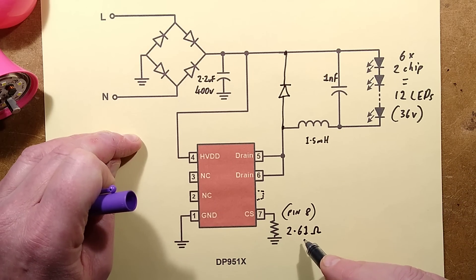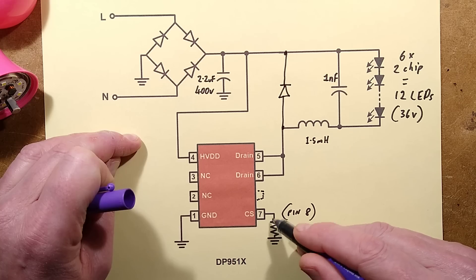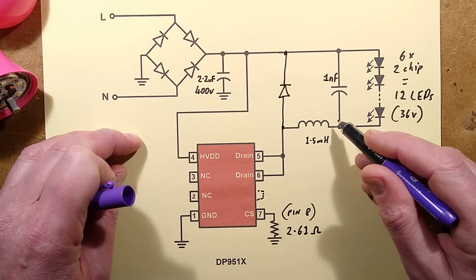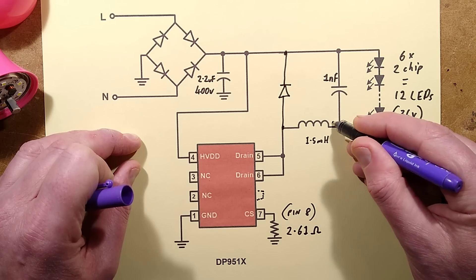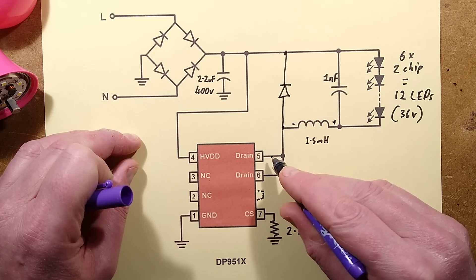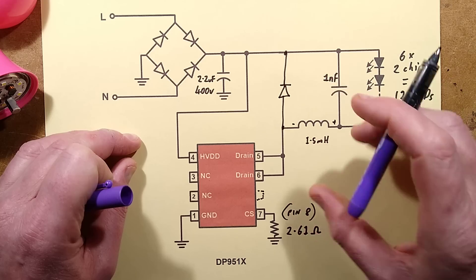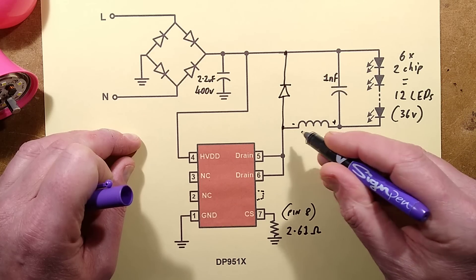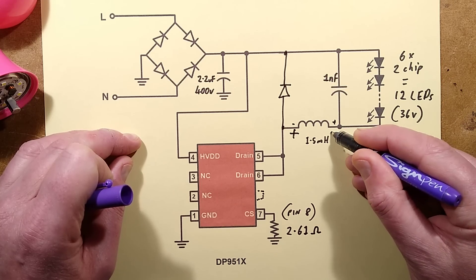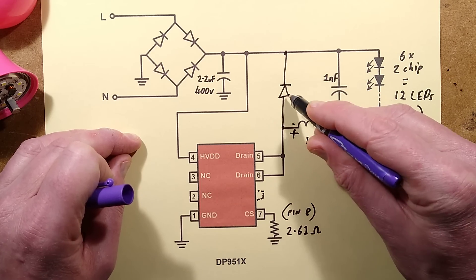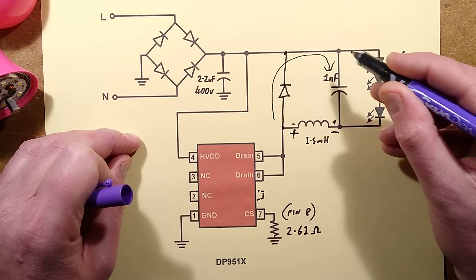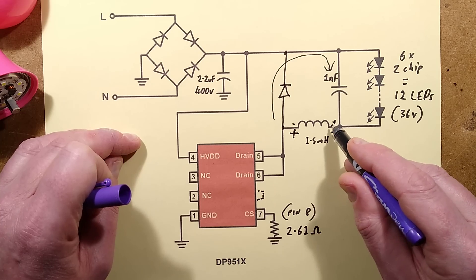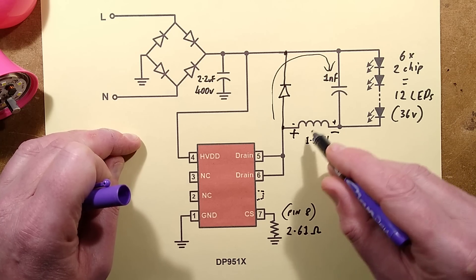Then that will turn off and normally what happens is that because the field in that will collapse, this end will go positive and this end will go negative, and they usually have this freewheel diode that actually diverts the current round so it's very efficient and both the charging and collapsing of the magnetic field contributes to the LED current.